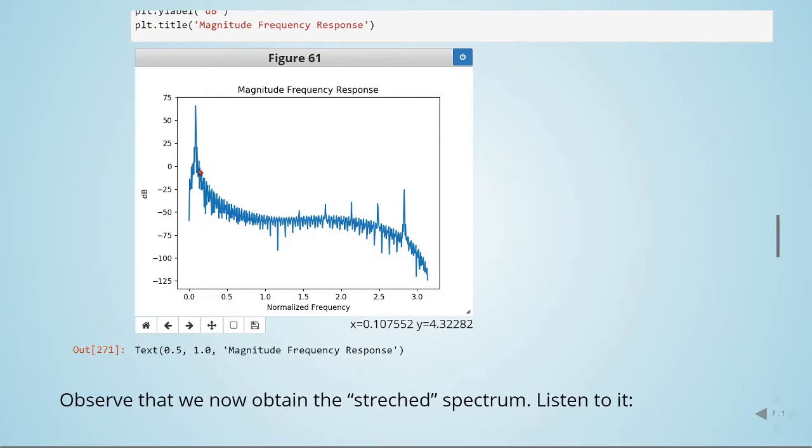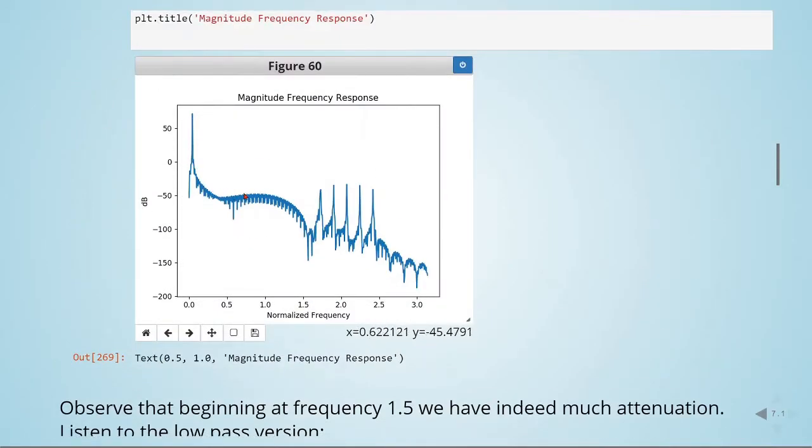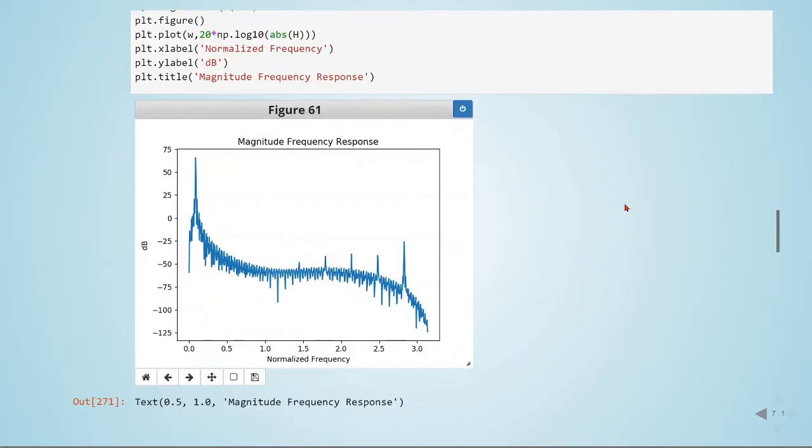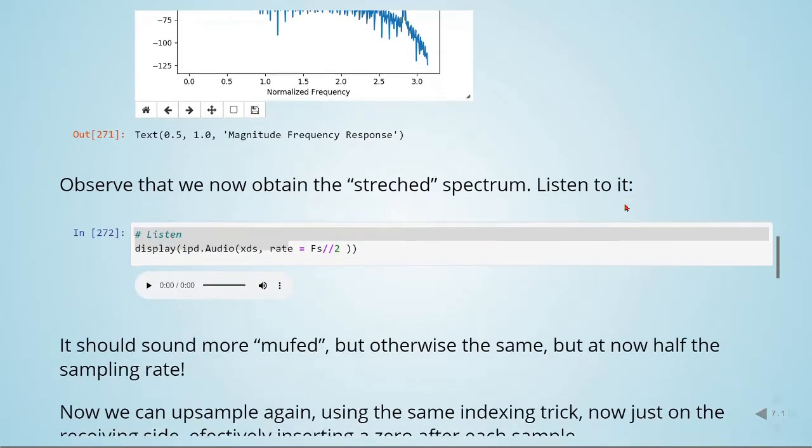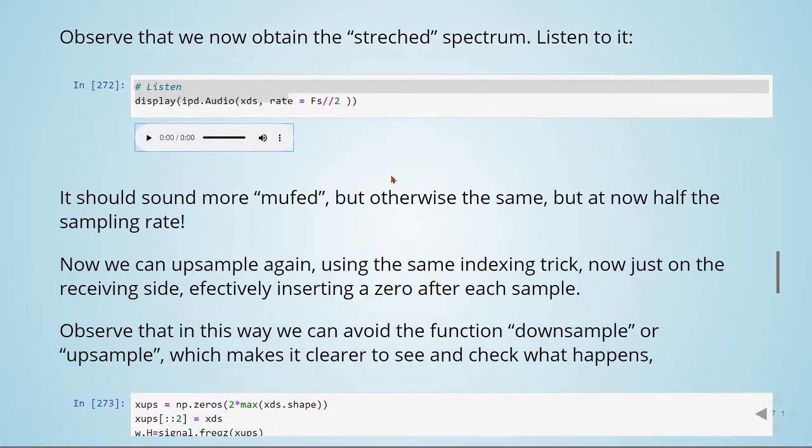This is the frequency response. Observe that now we obtain a stretched spectrum, so this part here is very similar to this part here. We can listen to this downsampled version. It's muffled, the same but now at half the sampling rate. If we want to upsample it again...